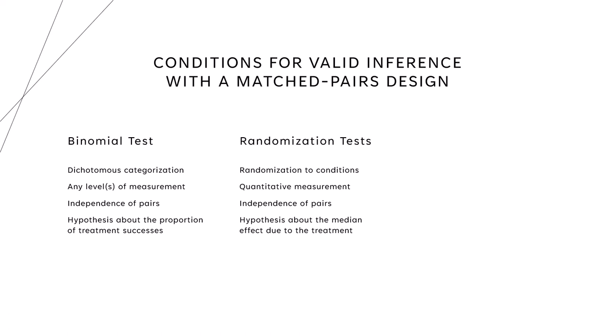that is, the median of the difference scores, where each difference score told us how much the treatment was able to influence one member of the pair. Note already that we have two different hypotheses here, and we can choose either one of them.